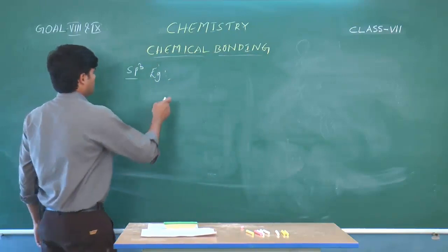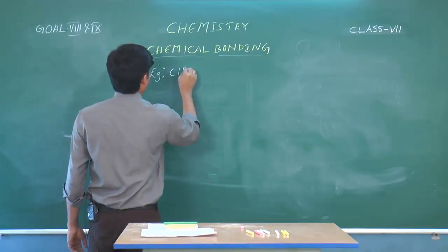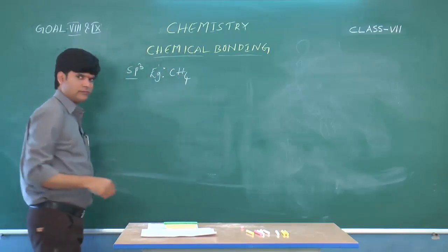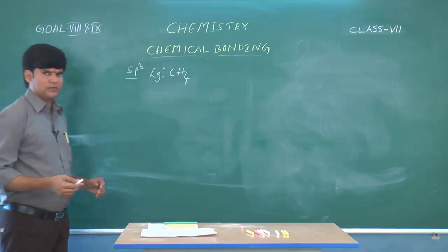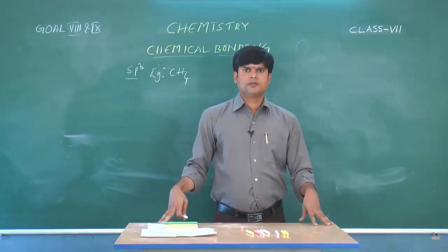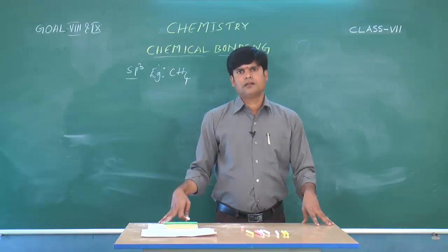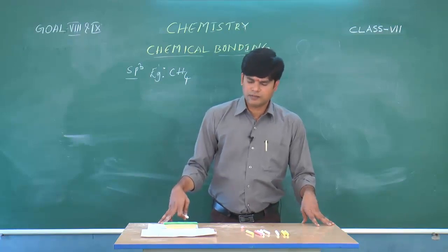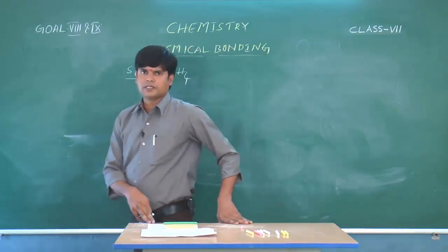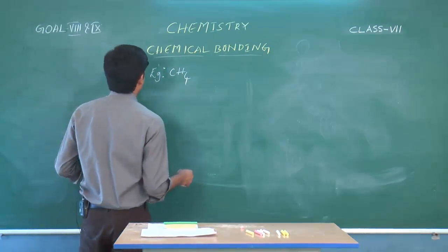For SP3 hybridization, we take the CH4 molecule — the methane molecule. Generally, 1s orbital and 3p orbitals will undergo hybridization, and it forms 4 equivalent energy hybrid orbitals. The shape of the hybrid orbitals is also the same, so 4 SP3 orbitals will be formed.